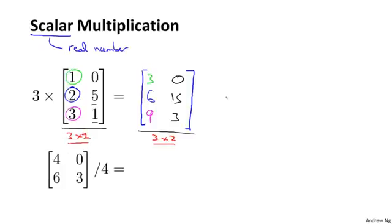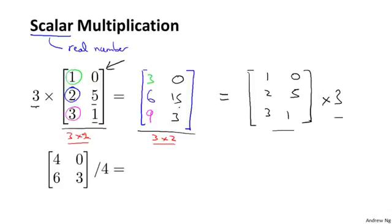And by the way, you can write multiplication either way. So I had 3 times this matrix. I could also have written this matrix times 3. So whether it's 3 times the matrix or the matrix times 3 is the same thing. And this thing here in the middle is the result.